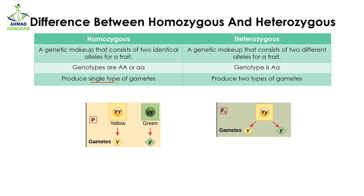Homozygous organisms always produce a single type of gametes because both alleles are the same, so all gametes will have the same type of allele. Here we can see that the yellow seed has capital Y capital Y, so all gametes will have only capital Y. Similarly, for green seeds, both alleles are small y small y, so all gametes will be the same, having small y.